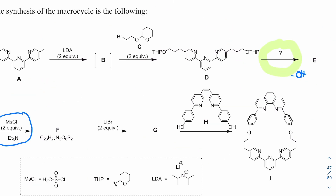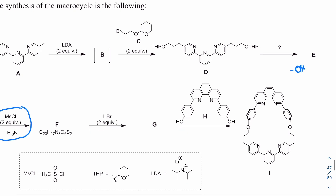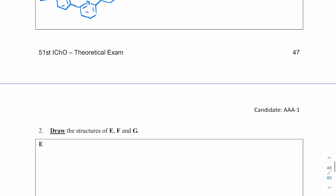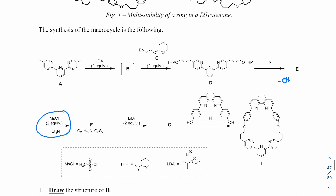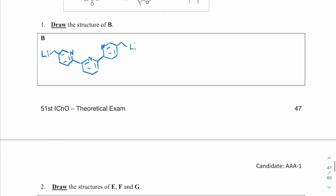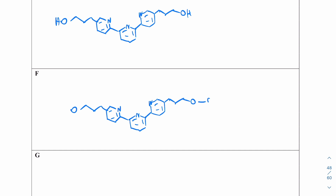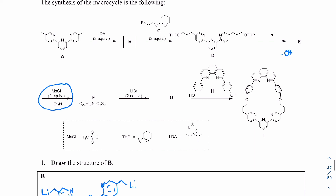The transformation removes the THP group and leaves a hydroxyl, so if I draw that molecule we get compound E. Then mesyl chloride and triethylamine mesylate the hydroxyls to give compound F. I'll draw the mesyl groups out explicitly. At this point, you really want to confirm the molecular formula because it is given as C₂₃H₂₇N₃O₆S₂.